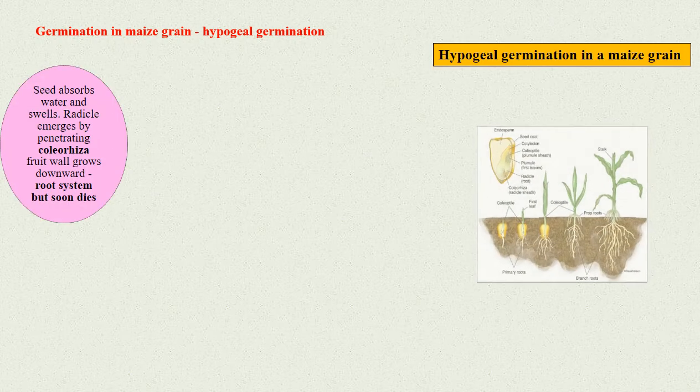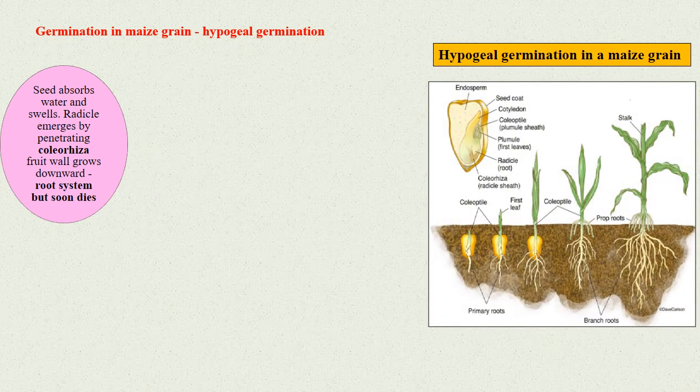Germination in maize grain - Hypogeal germination: The seed absorbs water and swells. The radicle begins to emerge by penetrating the coleorhiza, protective root sheath, and the fruit wall. It grows downwards to form the root system but soon dies.